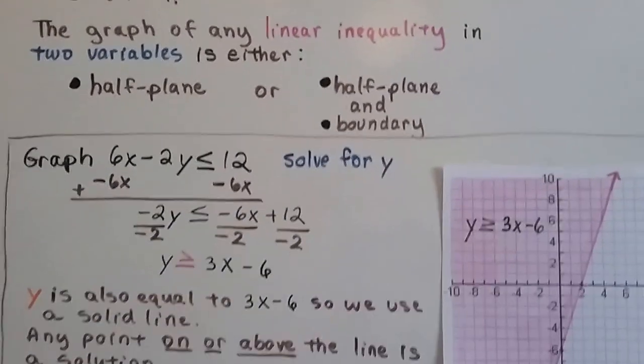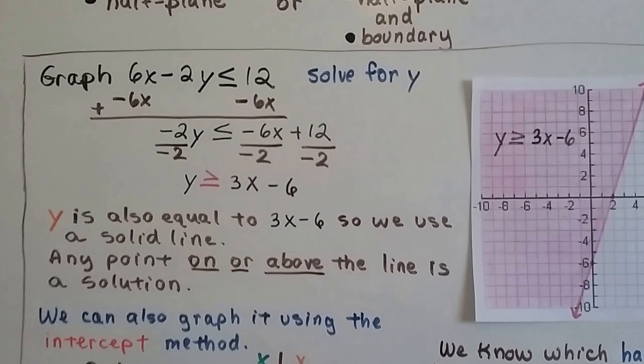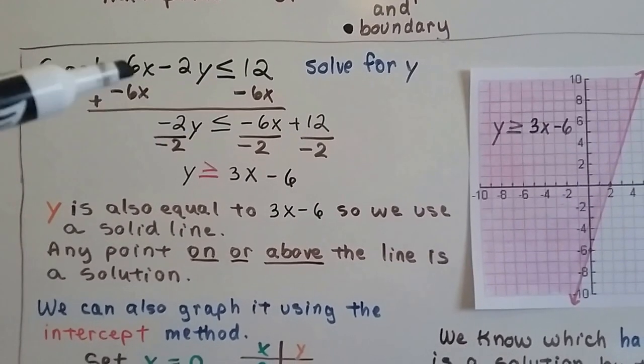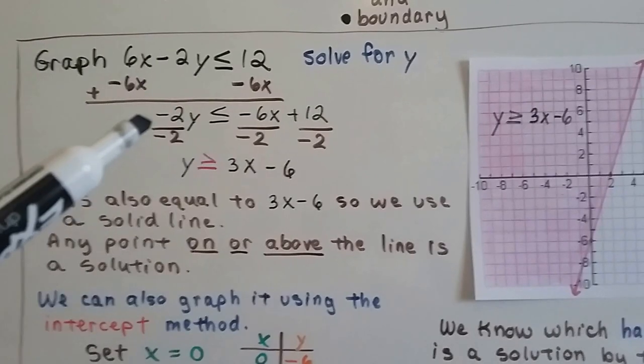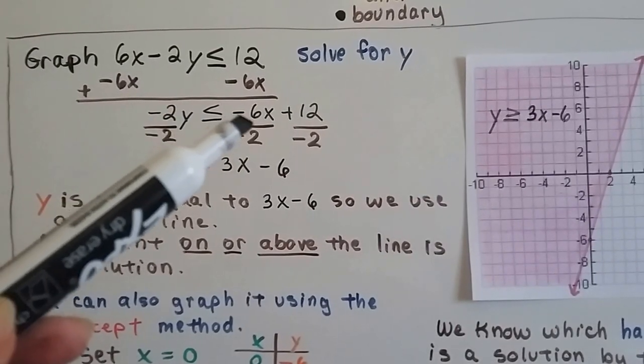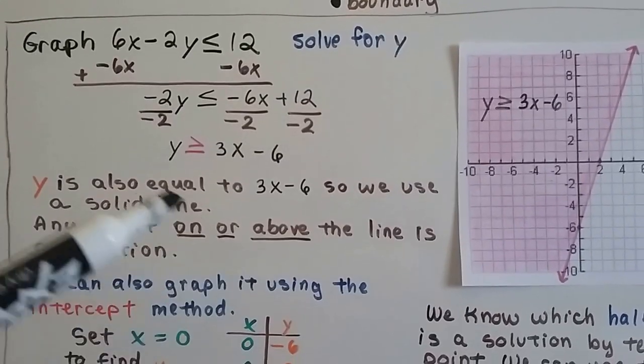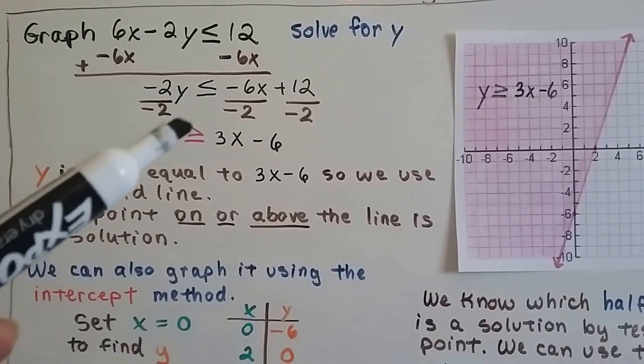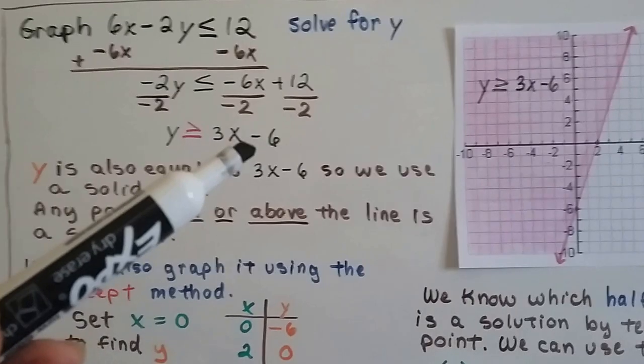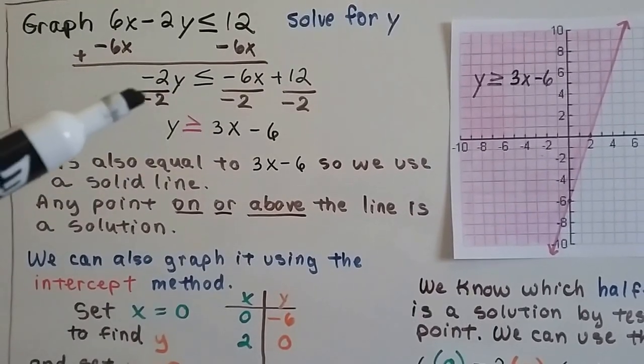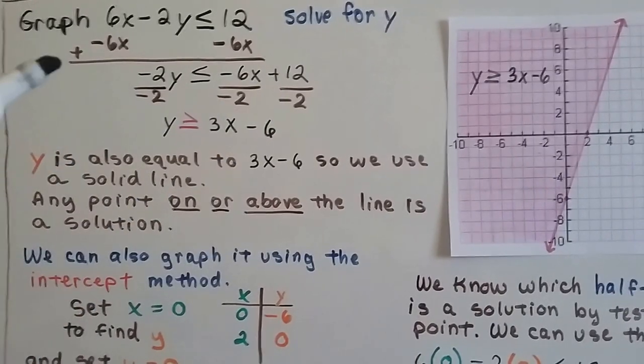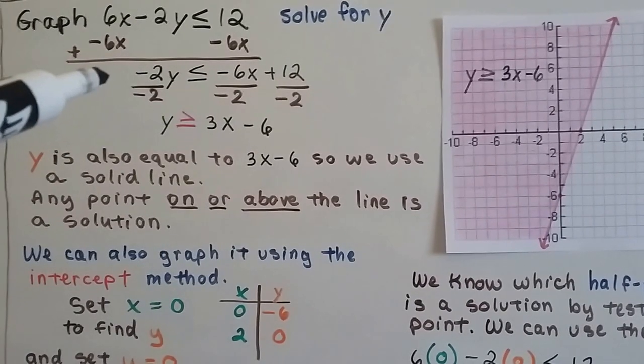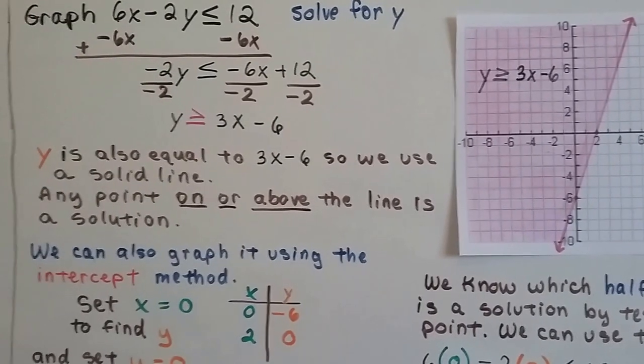We can graph 6x - 2y ≤ 12. We can solve for y. So we set it to solve for y, so we add a -6x to each side of the equation to isolate the y, and we get -2y ≤ -6x + 12. We can divide each term by this -2 to isolate the y, and we get that y ≥ 3x - 6. Now, you notice that I flipped the sign? That's because I divided by a negative. We also could have multiplied by the reciprocal of -2 as -1/2, and because multiplying by a negative, we would have still had to flip that sign.